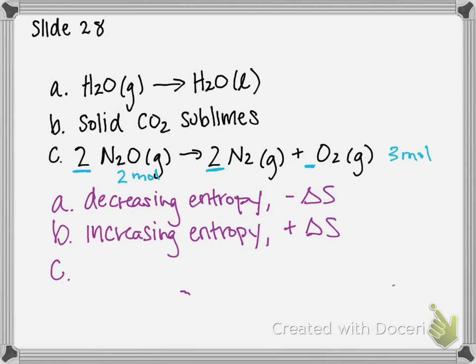So if we're increasing our number of moles between going from reactant to product, that means that our entropy is increasing. So we have an increasing entropy, which would give us a positive delta S. And that's how you determine whether entropy is increasing or decreasing for an already written reaction.